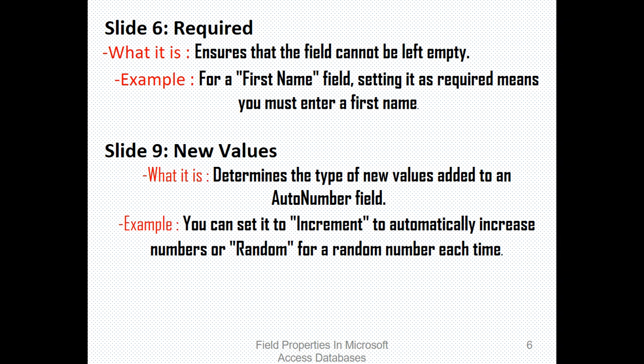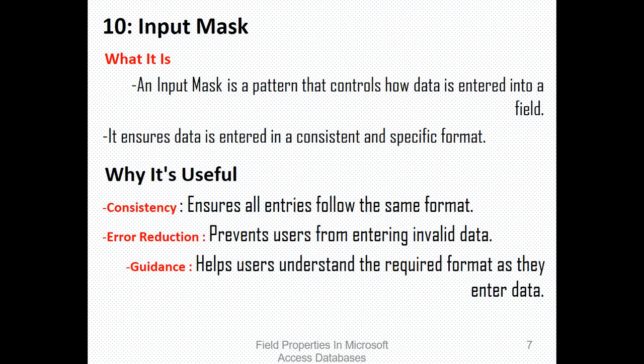Then we have new values. It determines the type of new values added to an AutoNumber field. You can set it to increment to automatically increase numbers, or random for a random number each time. This is used in AutoNumber fields where you may wish the auto number to be random, or increment means it will give 1, 2, 3, 4 in a specific manner.